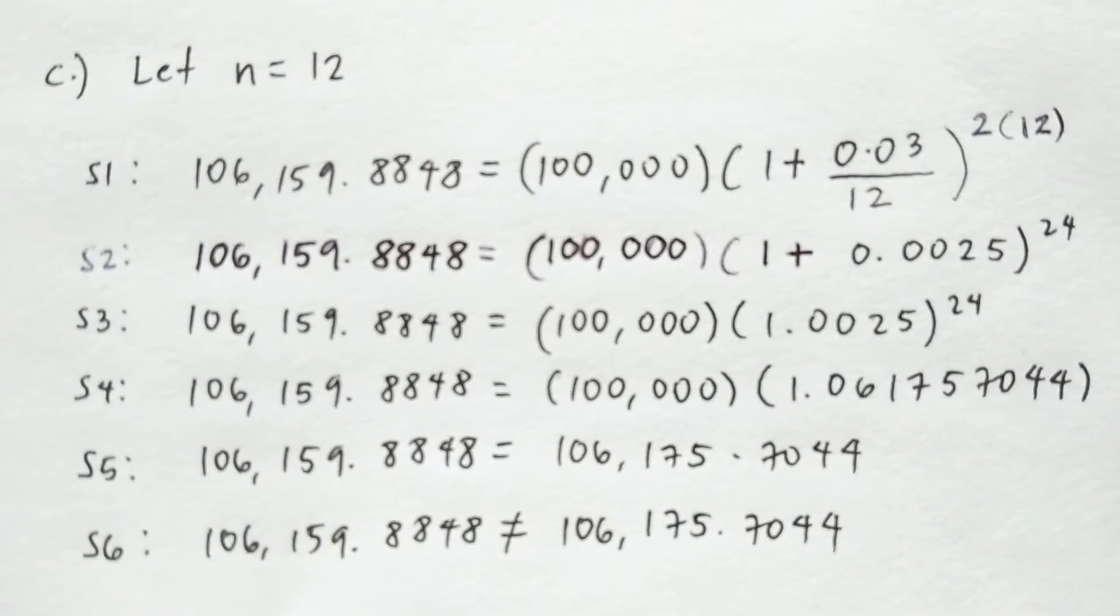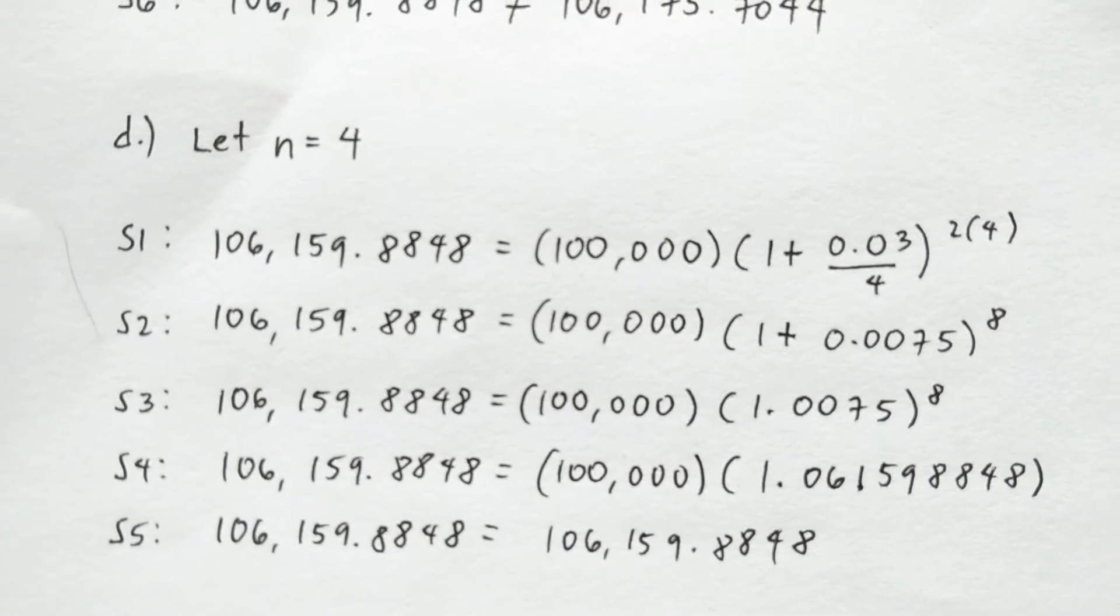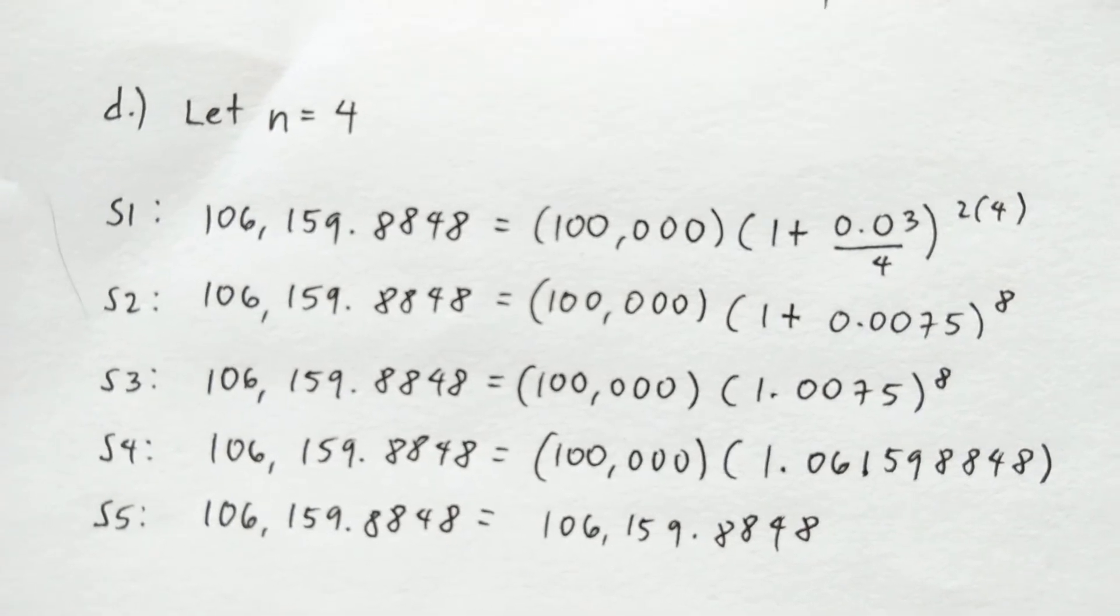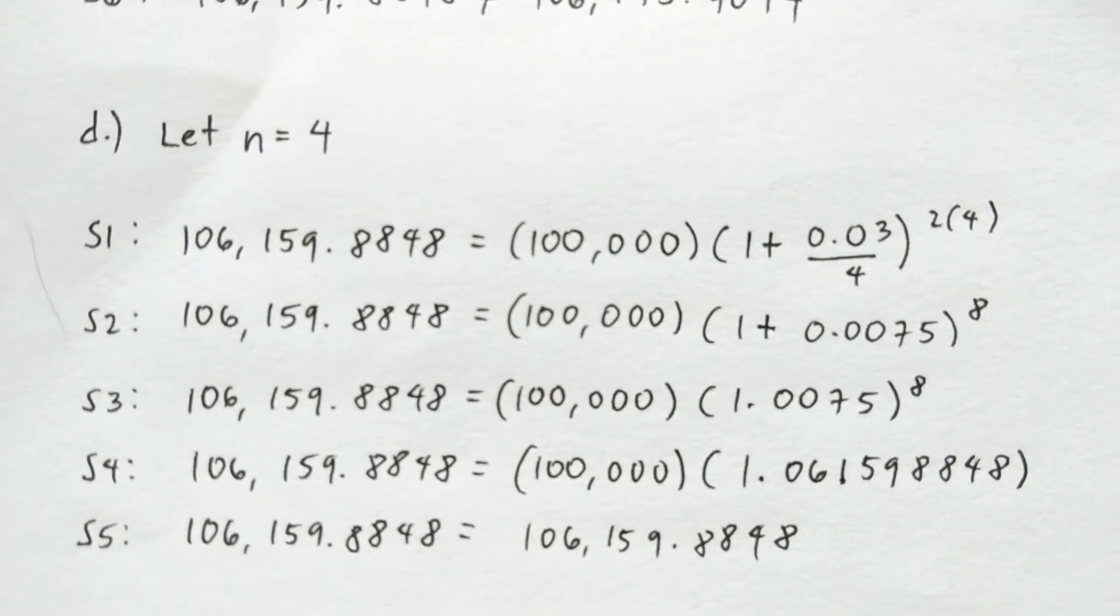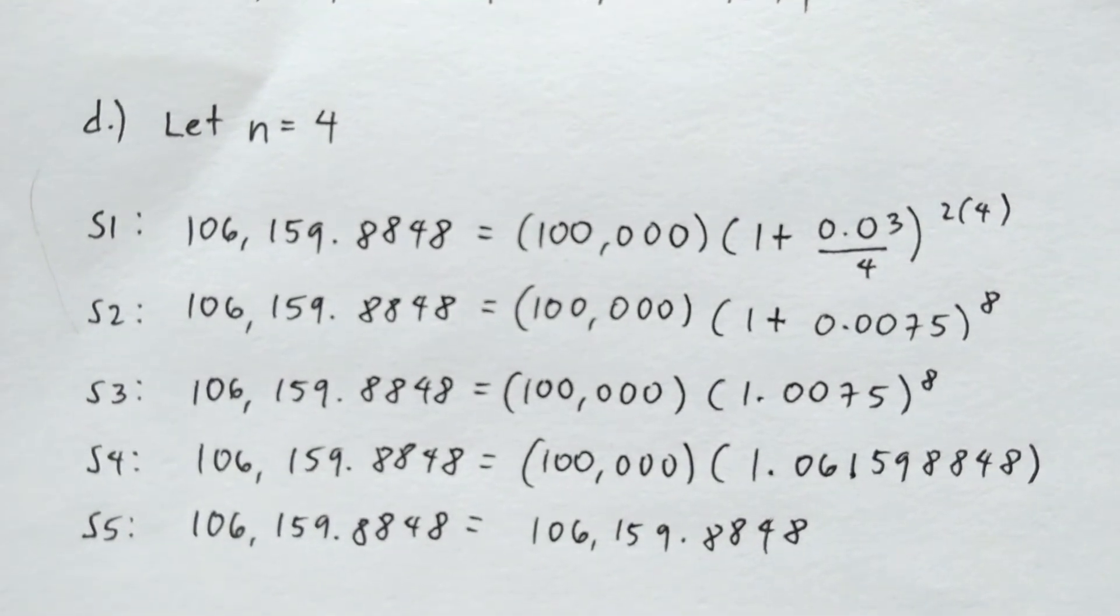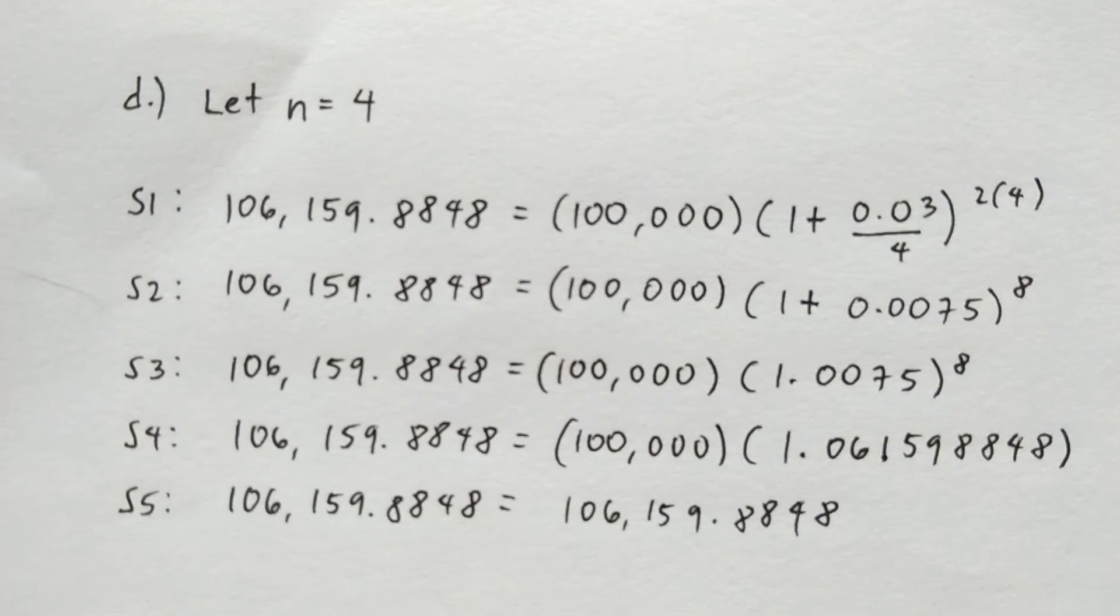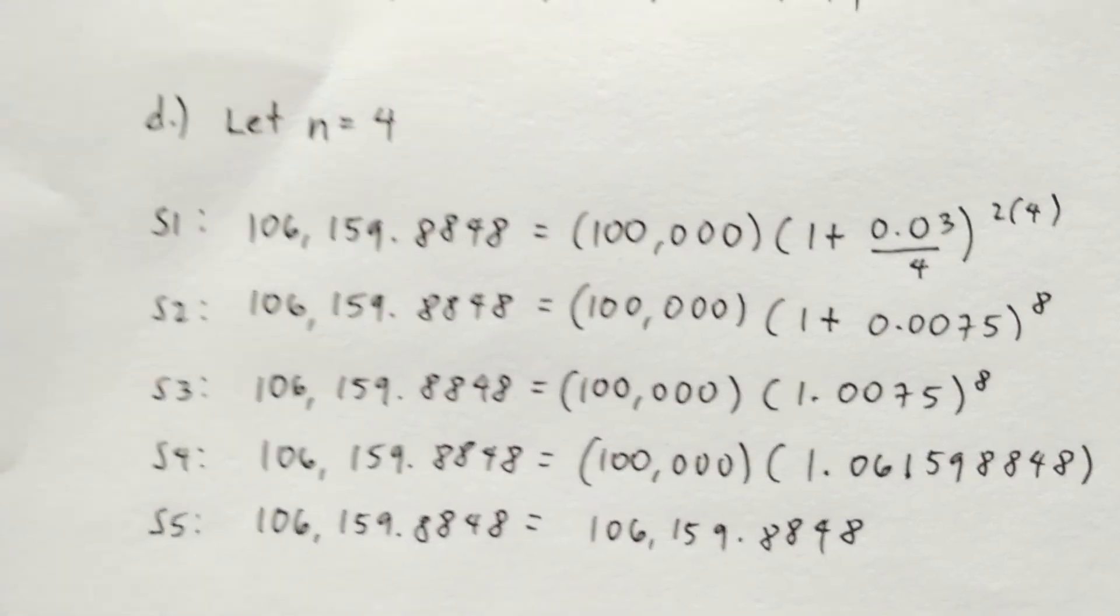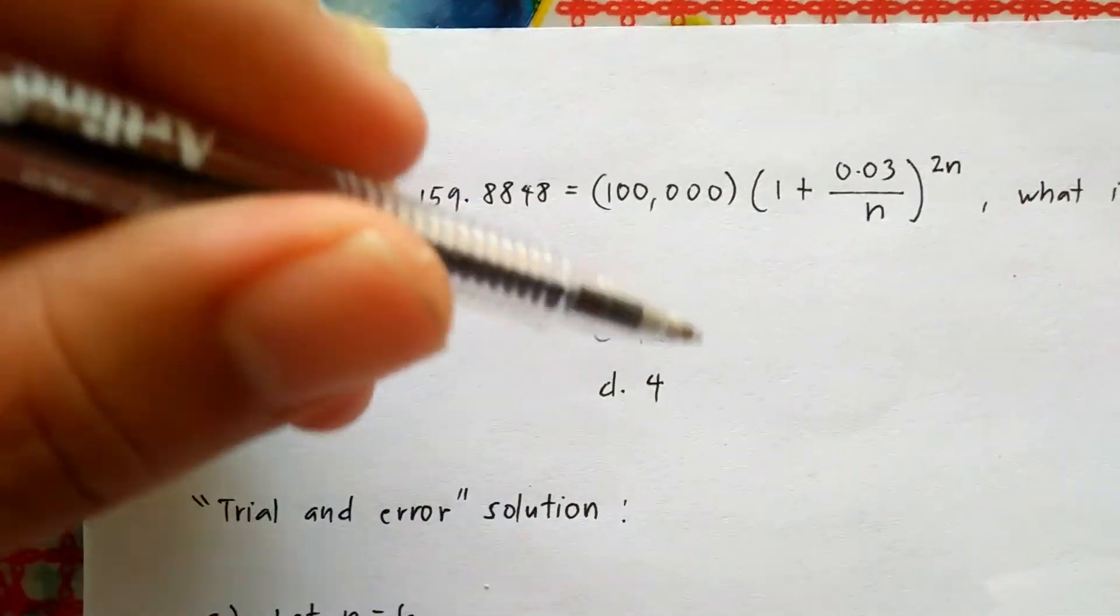Now we have letter d. By this time we don't have step 6, because in step 5 we have shown that both sides of the equation are equal to each other. As long as you are able to show that both sides are equal using a certain value of your n, then that value of n must be the solution of the problem. So we can say that the answer to this problem is letter d.